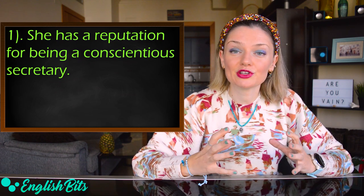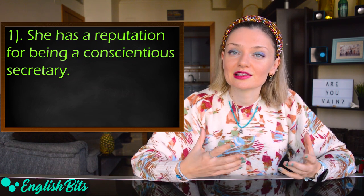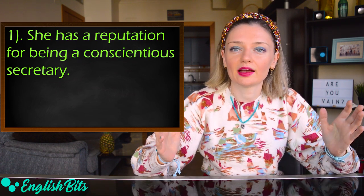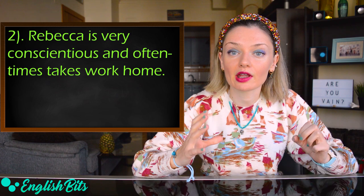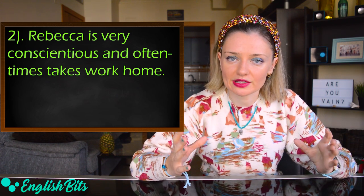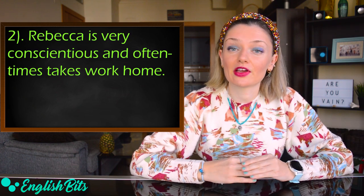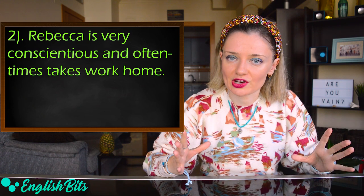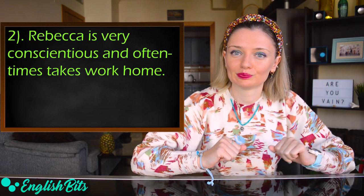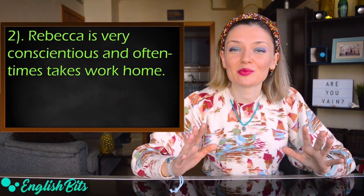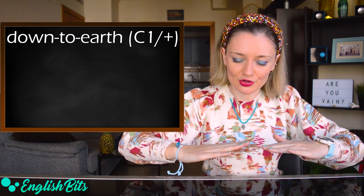Another example: Rebecca is very conscientious and oftentimes takes work home. Let's continue. Number six: down to earth. It describes someone who is relaxed, chill, relatable, approachable, and friendly — a very pleasant person to be with.